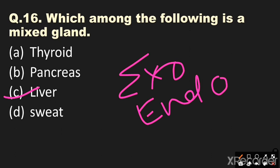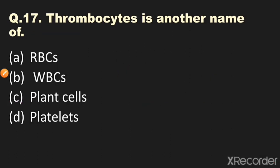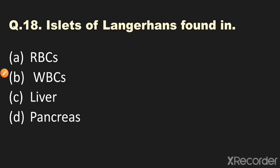Question number seventeen: Thrombocytes is another name of? Options: A) RBCs, B) WBCs, C) plant cells, D) platelets. The answer is platelets — platelets are also called thrombocytes. Question number eighteen: Islets of Langerhans are found in? Options: A) RBCs, B) WBCs, C) liver, D) pancreas. The answer is pancreas — islets of Langerhans are found in the pancreas.